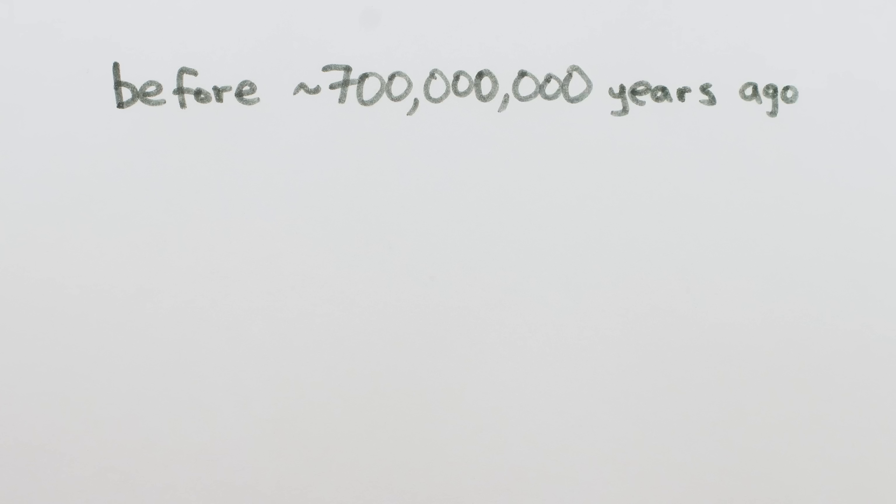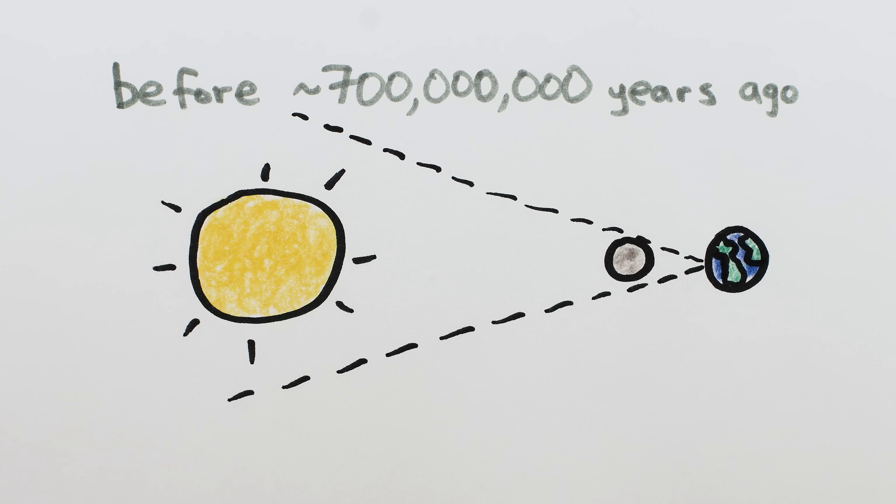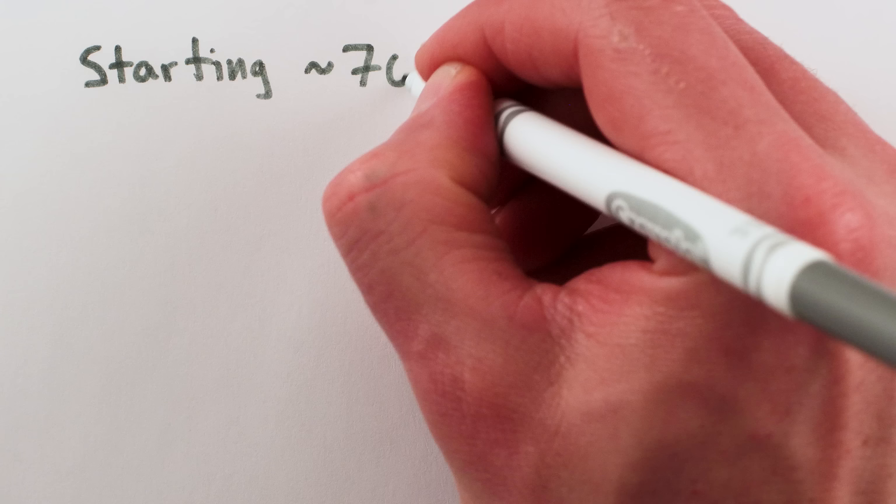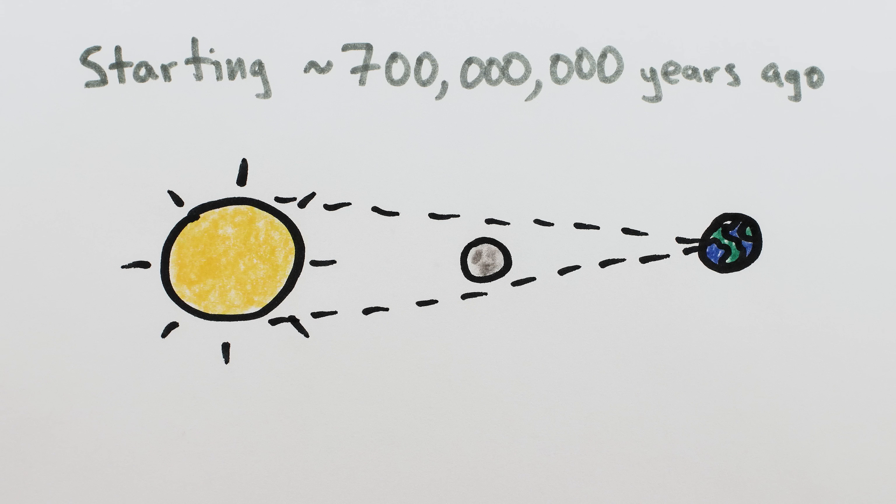Up until around 700 million years ago, the moon was close enough to the Earth that it always appeared larger than the sun, and we only ever saw total solar eclipses. But around then, the moon finally moved far enough away from us that, at least during certain parts of the Earth's and moon's orbits, the moon appeared smaller than the sun in the sky.